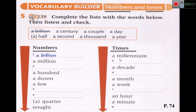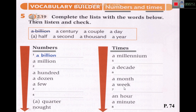Then a quarter, and naught means zero or nothing. For times: a millennium — how many years in a millennium? A thousand years. Less than a millennium — a century, that's a hundred years. A decade means ten years. Less than a decade — a year, a month, a week. Less than a week — a day, an hour, a minute, and the smallest is a second.